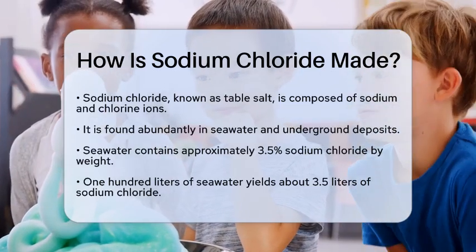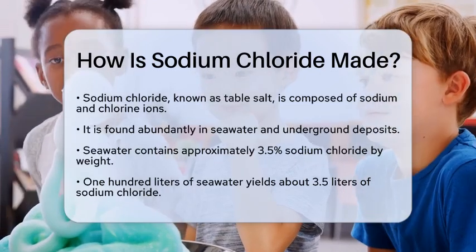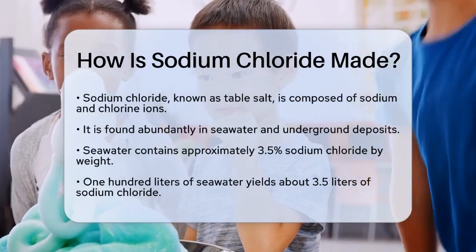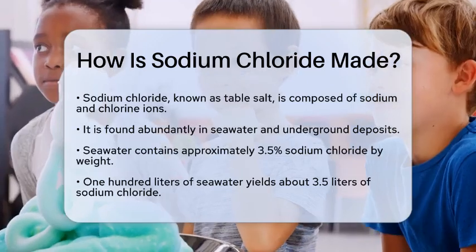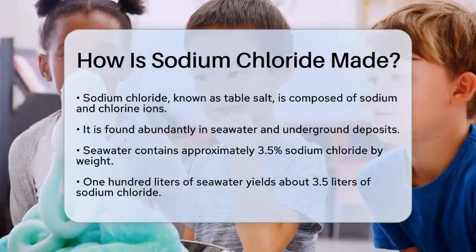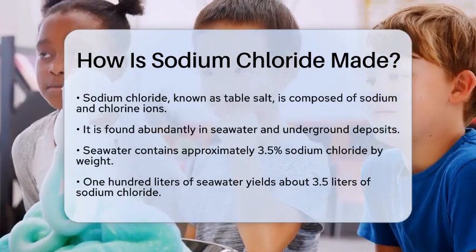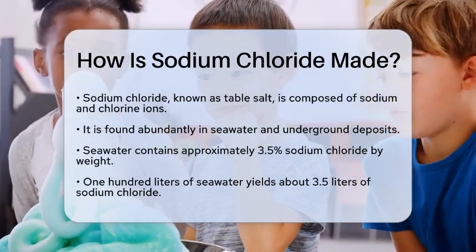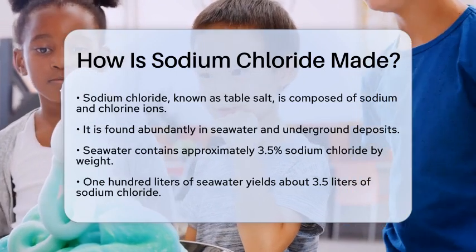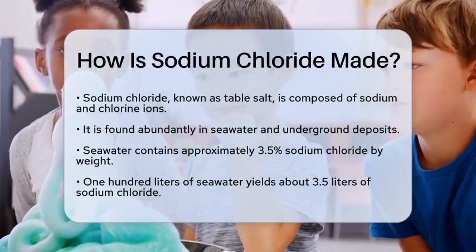Sodium chloride can be found abundantly in seawater and underground deposits. Seawater contains about 3.5% sodium chloride by weight, meaning that if you were to take 100 liters of seawater, about 3.5 liters would be sodium chloride. Underground deposits can also be mined directly, providing another source of this compound.